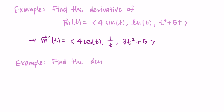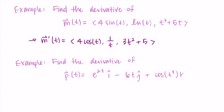Let's find the derivative of the vector p(t) = e^(2t) i − 6t j + cos(t⁸) k. Pause the video and try this on your own.